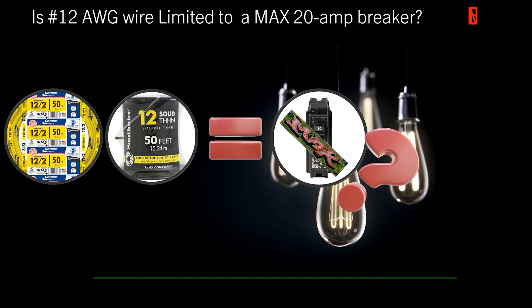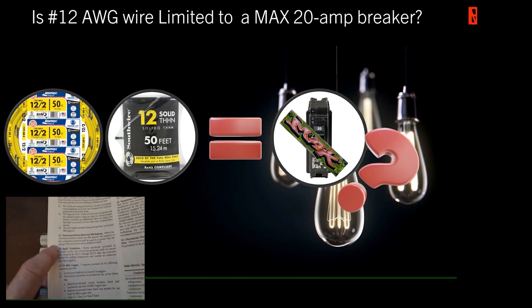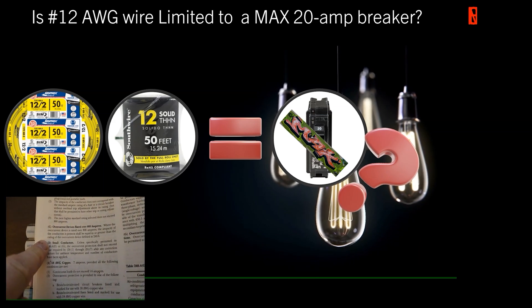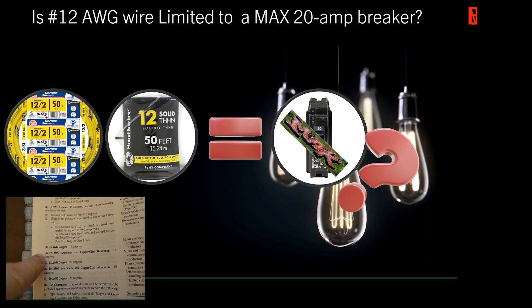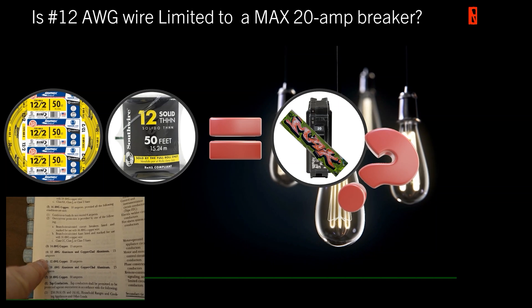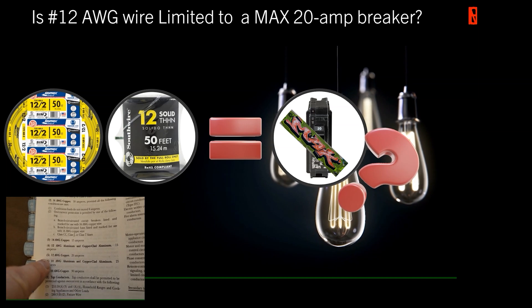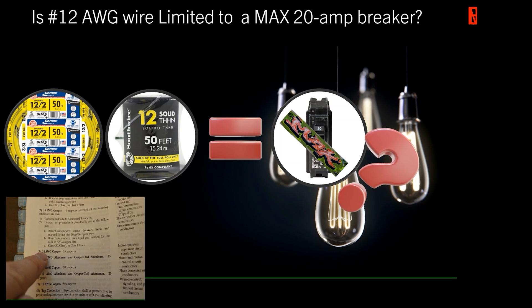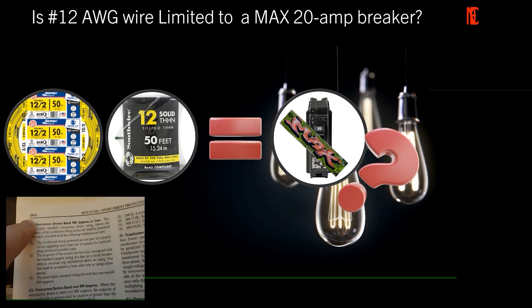This does spawn from 240.4 part D, and that is actually dealing with small conductors. It does specify that when you're dealing with conductors 18 through 10 gauge, there are some limitations as far as overcurrent protection. 12 gauge is one of them, so it's limited on copper to 20 amps. Same thing when you get down to 10 gauge, it's limited on copper to 30 amps. When you jump back up to 14, it's limited to a 15 amp breaker.